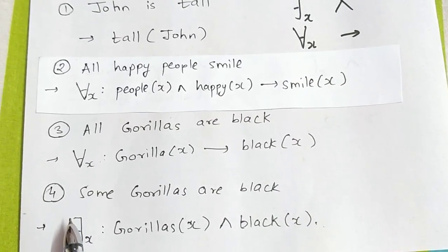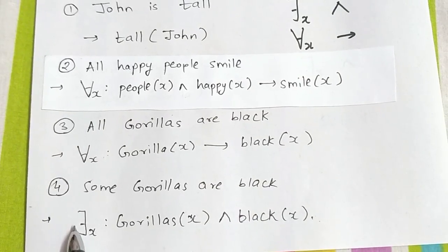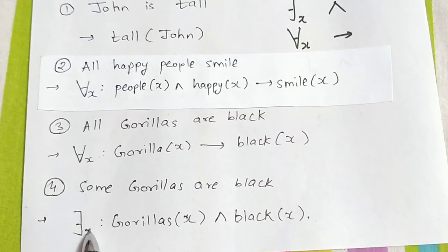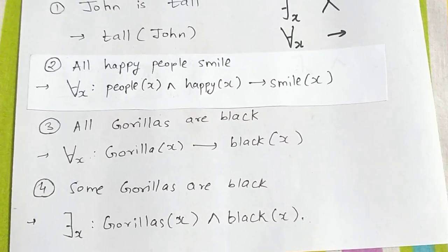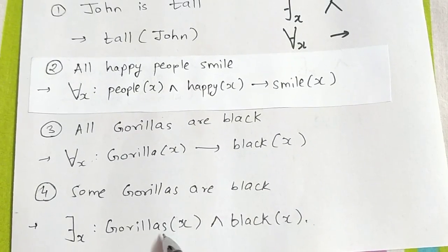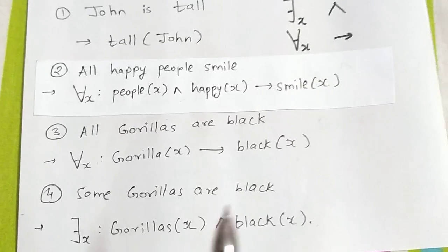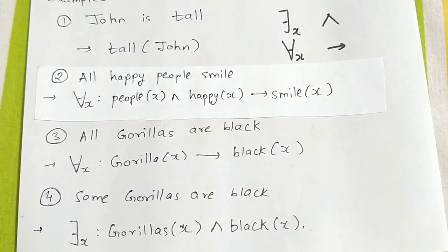Our next example is some gorillas are black. Here we use existential quantifier because of the word 'some'. Existential X, gorilla(X), and these X are black. Hence we use conjunction.